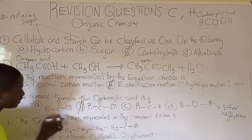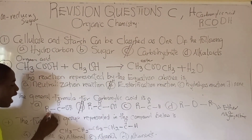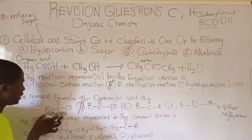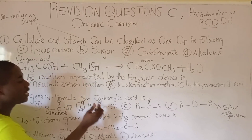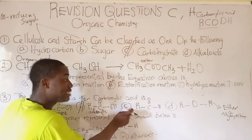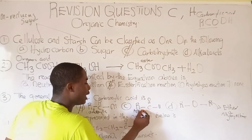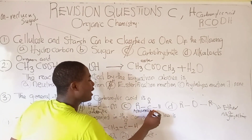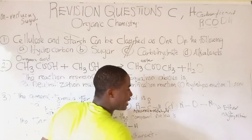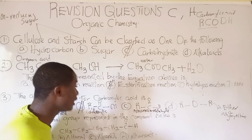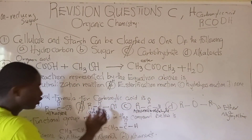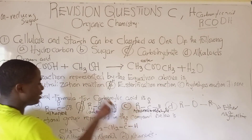So option B is the carboxylic acid. Option A is an alkanol or ketone, option C is an alkanol or aldehyde, and option D is an ether or alkoxyalkane. Option B is the correct general formula for carboxylic acid.